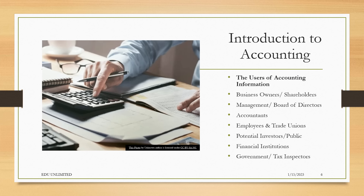Shareholders also use accounting information because it helps them determine if they should buy more shares in a company or sell — it helps them make informed decisions. We then look at management and the board of directors, who also use accounting information to make decisions about the company — for example, should they increase the salary of employees or seek a new supplier? The accountants themselves use financial information to prepare final accounts, cash flow statements, bank reconciliation statements, and the balance sheet.